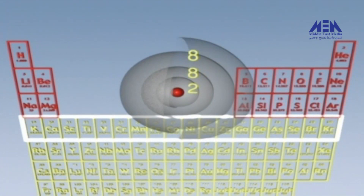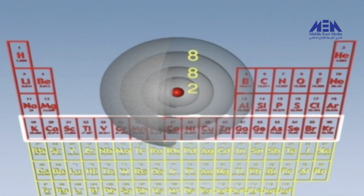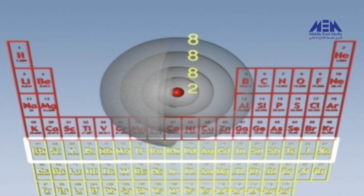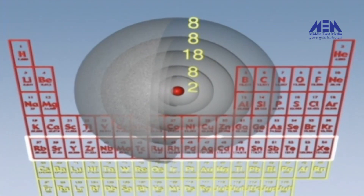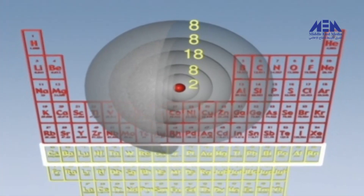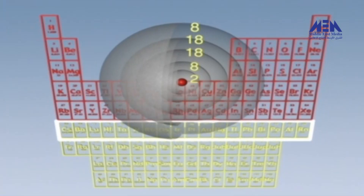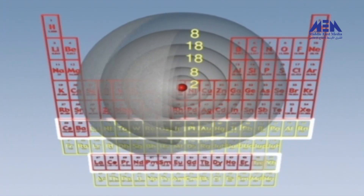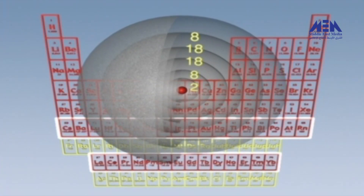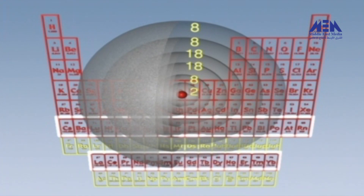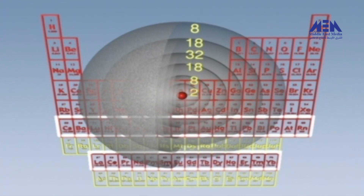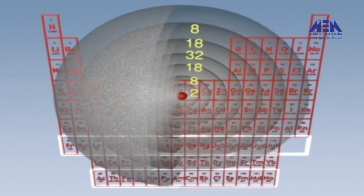The fourth period adds 18 electrons, but the outermost shell will contain no more than eight electrons — the remaining ten are added to the inner third shell. The fifth period adds a further shell, but again there will only be eight electrons in the outer shell. The sixth period is often split into three locations in the table, with up to 32 electrons. Once again, the outermost shell can contain only eight electrons, with the extra electrons distributed to the inner shells.